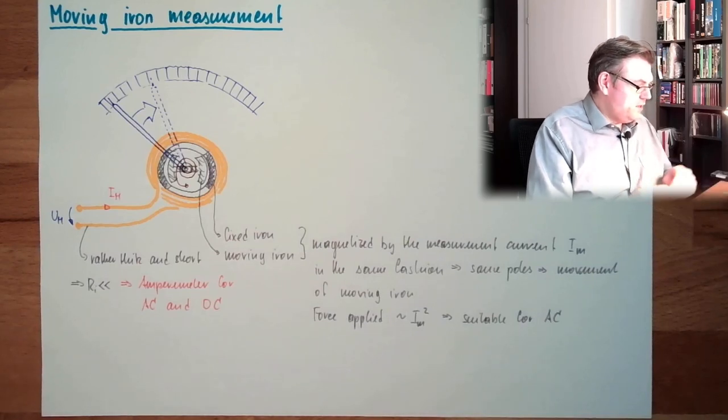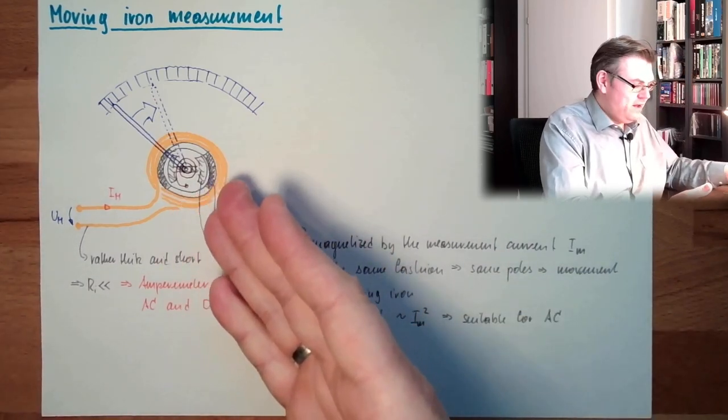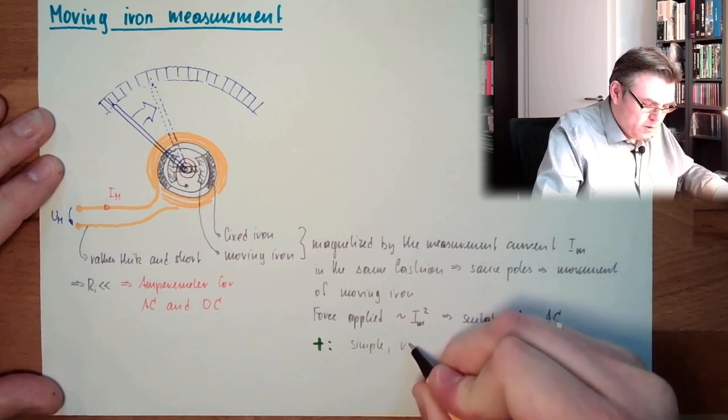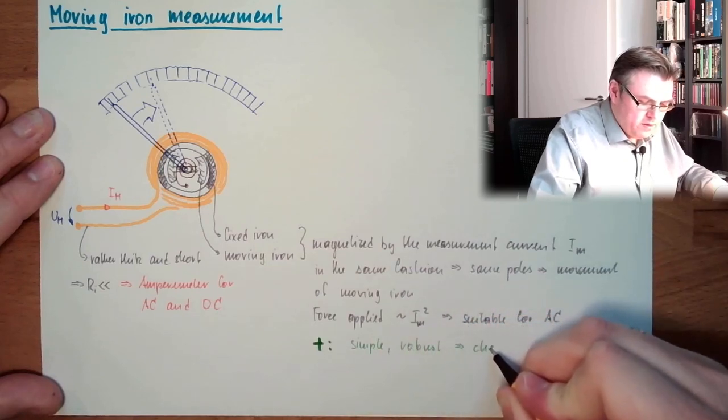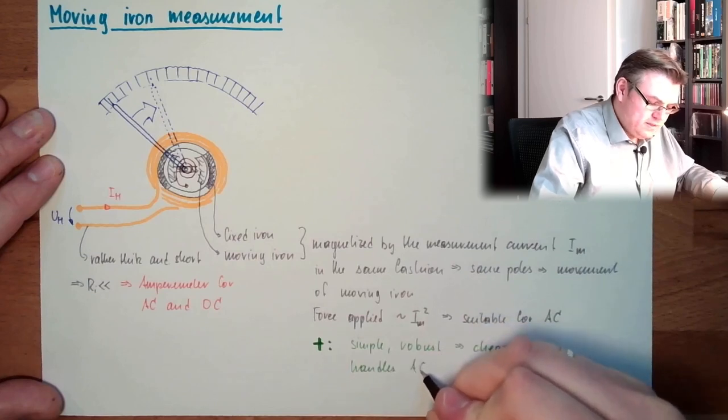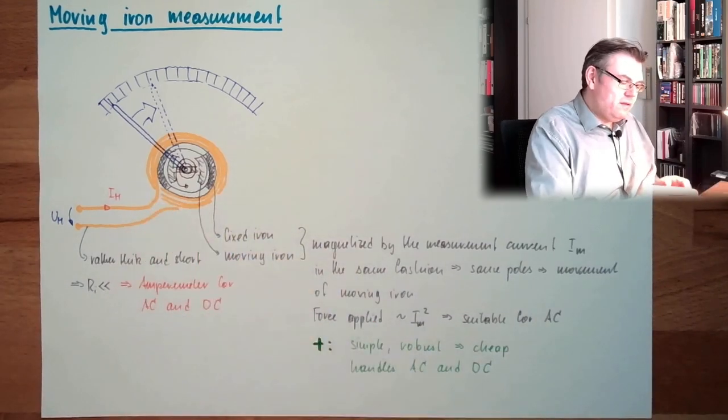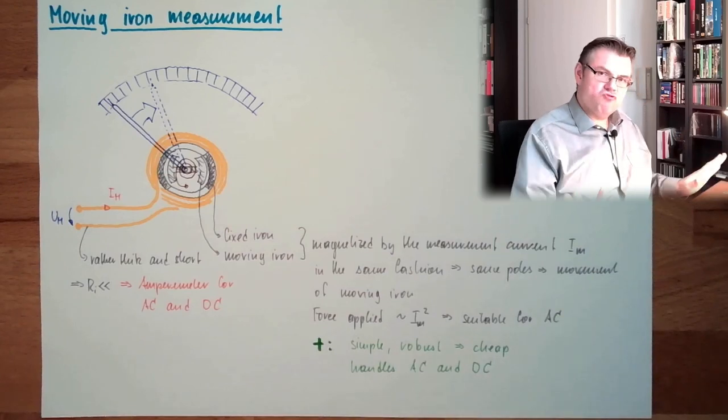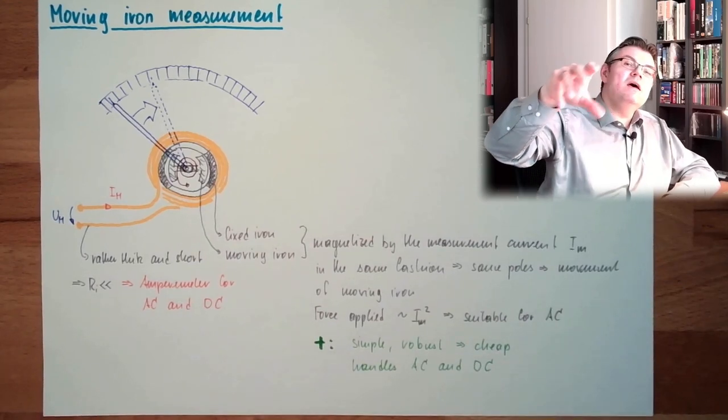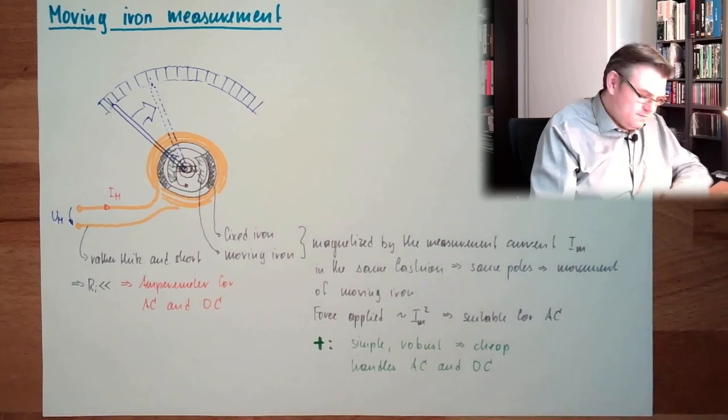So what is the advantage now? The moving part is rather simple, so it's simple and robust, so it's relatively cheap, alright? And we can handle AC and DC. And we can also adapt the wire and so on. We can do ampere meters, we can do voltmeters, great! This is actually the reason why a lot of these built-in, cabinet built-in measurement devices are moving iron measurements, because they are simple, robust, cheap, and so on.